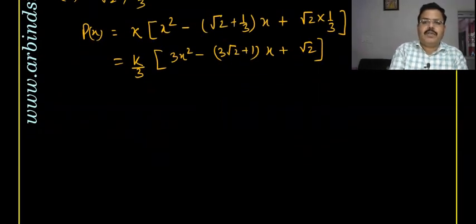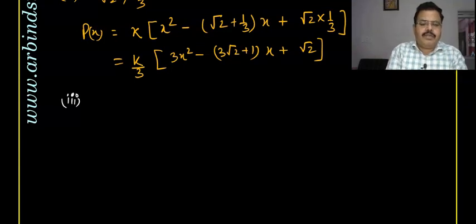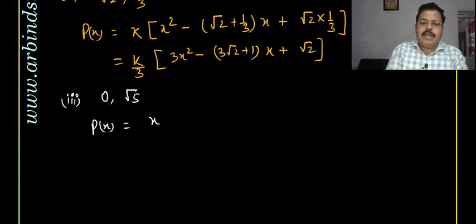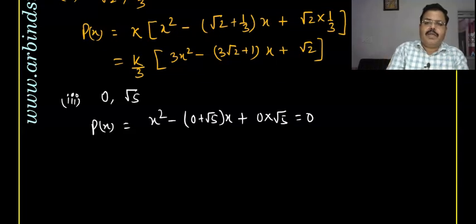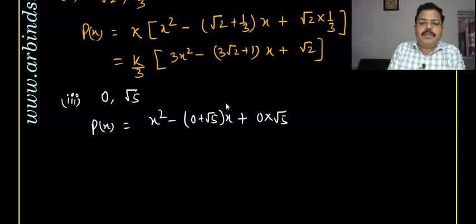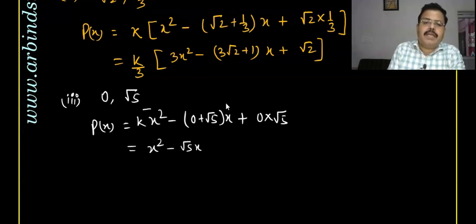Similarly, you can do all those questions because all of them follow the same pattern — you just need to put in the values. For the zeros involving √5, the polynomial is equal to x² minus (sum of zeros) into x, which gives x² - √5·x, and k is an arbitrary constant, so that can be written accordingly. That will be the answer.